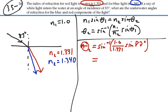So, if I calculate this, 1.0 divided by 1.331 times the sine of 83 degrees, inverse sine of all that, 48.22 degrees. So, that is the angle of refraction for the red light, 48.22 degrees.